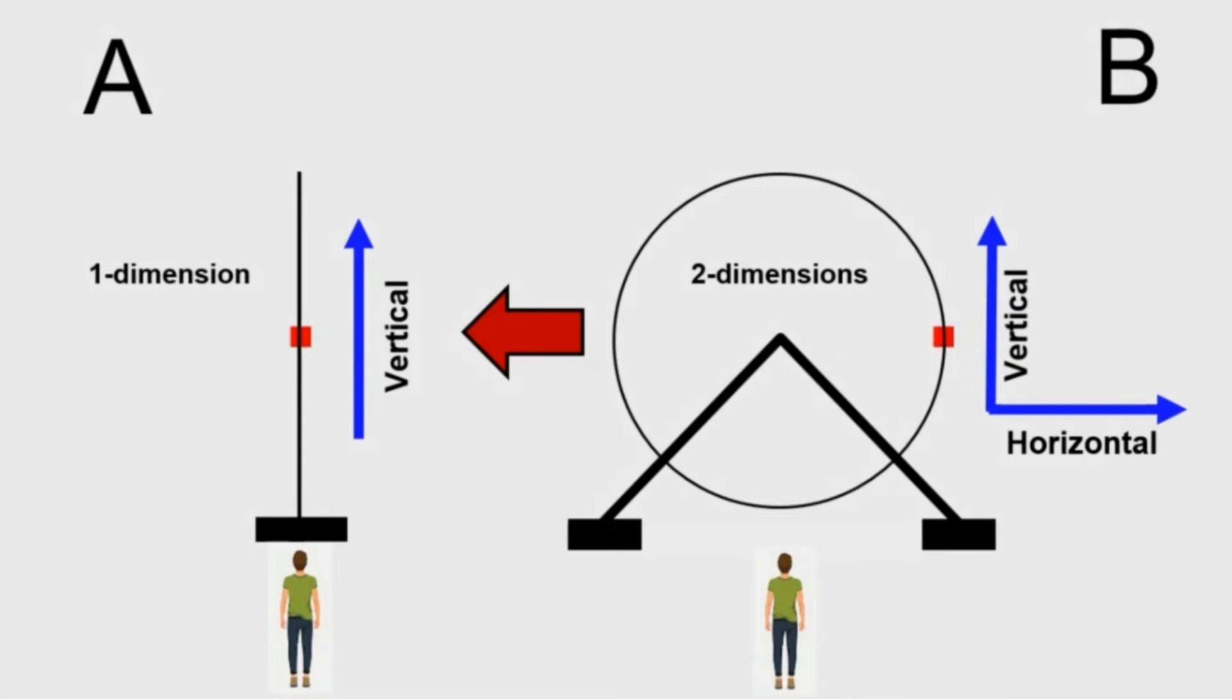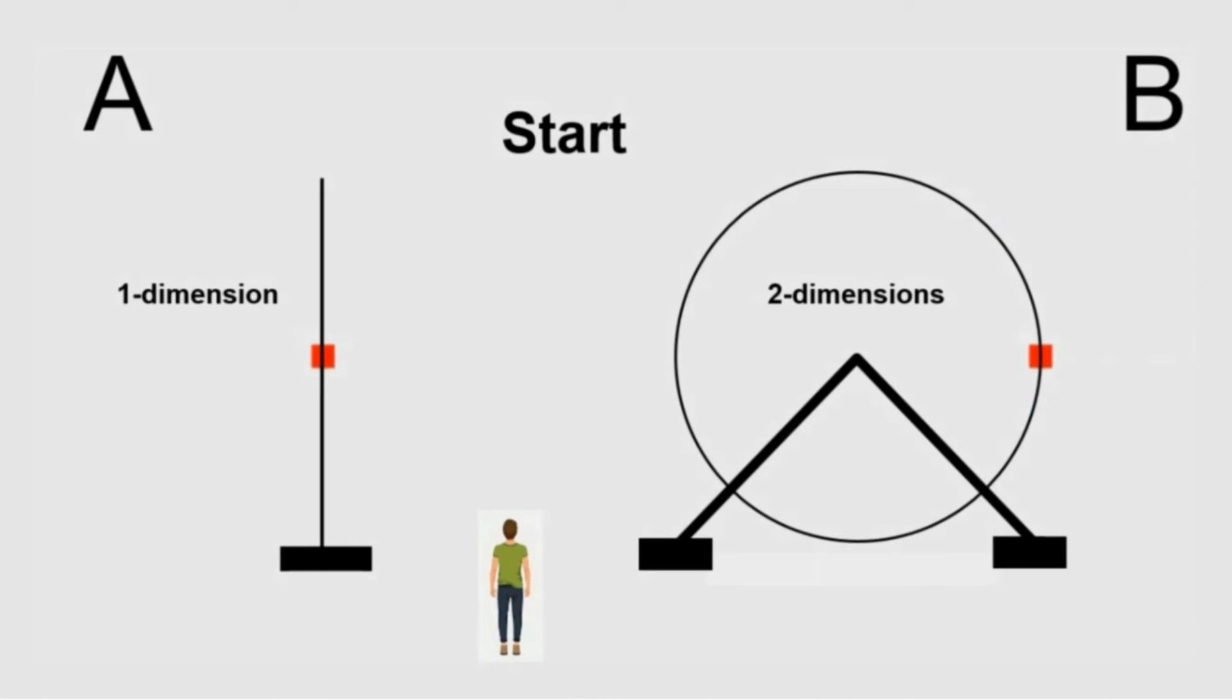So we just took a two-dimensional motion on the right in view B, with both vertical and horizontal components, shown in blue, and turned it into a one-dimensional motion, just vertical, as seen on the left in view A. So we start at time 0.